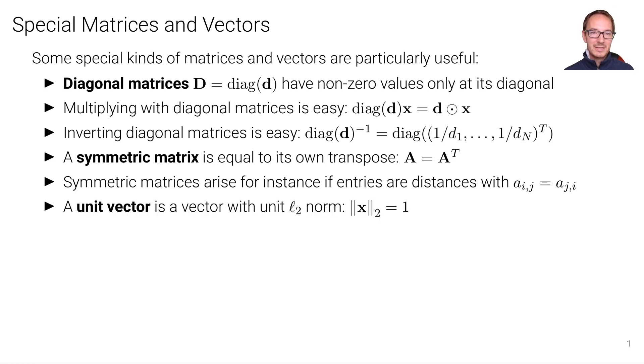A unit vector is a vector for which the L2 norm, the Euclidean norm, is equal to one. And this is also a mathematical object that occurs frequently, and they will use a name by its name, unit vector.